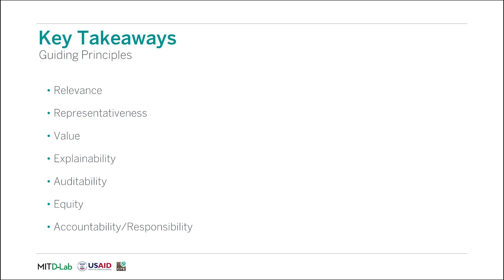As a review, we talked about seven characteristics for the appropriate application of machine learning in this module. The first is relevance. The second is representativeness. The third is value. The fourth is explainability. The fifth is auditability. The sixth is equity. And the seventh is accountability and responsibility. Be sure to take these into consideration while you're implementing your own solutions.